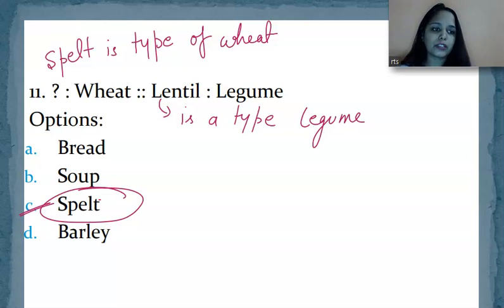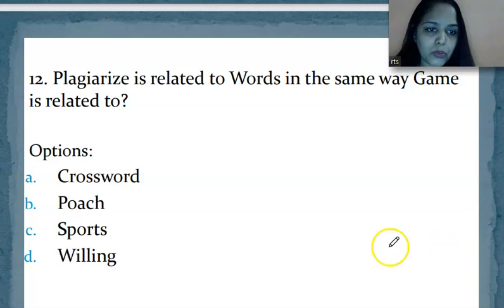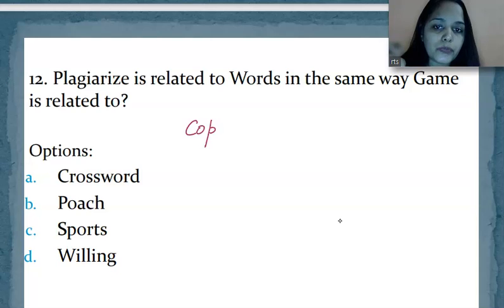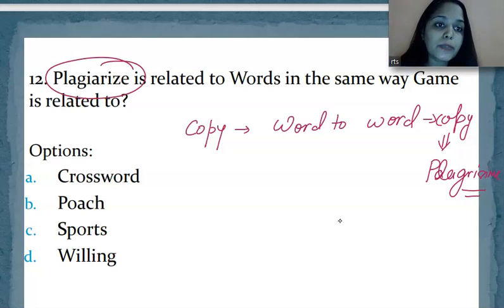Now come to the next question. Let's do it quickly. We have to do many questions. Plagiarize is related to words in the same way game is related to which one? Now see, plagiarize means what? When you copy someone, when you copy word to word. Word to word you copy, that is called what? That is called plagiarism. Copying words is called plagiarizing.